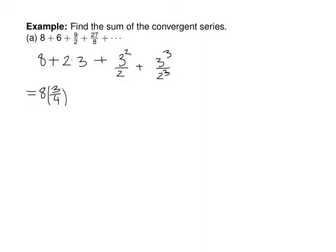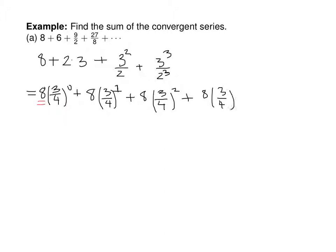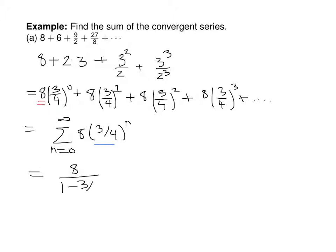Let's try 8 times 3 quarters to the 0. It appears that 8 is my a, and multiplying by 3 quarters to the 1st gives the right second term. Plus 8 times 3 quarters squared — squaring the 3 gives 9 and 4 squared makes 16, so 8 over 16 reduces to 1 half — plus 8 times 3 quarters to the 3rd, and so on. So this can be expressed as the sum from n equals 0 to infinity of 8 times 3 quarters to the n. Since the absolute value of 3 quarters is between 0 and 1, this equals 8 over 1 minus 3 fourths, which is 8 divided by 1 fourth, equal to 32.